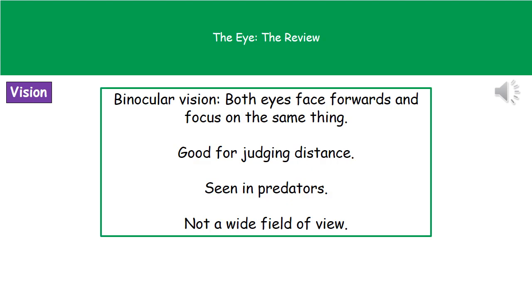There are two different types of vision. The first is the one we as humans have, called binocular vision, characterised by having both eyes facing forwards and able to focus on the same thing. Binocular vision is very good for judging distance, which is why you can work out how far away something is and catch things easily. Predators tend to have binocular vision. However, you don't have a very wide field of view — if you look straight ahead and move your fingers around towards the back of your head, you'll see roughly the width of your head before you lose sight of them.